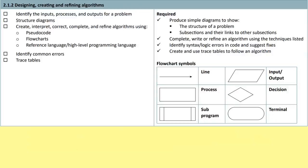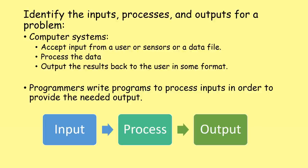Moving on, we are at 2.1.2 designing, creating and refining algorithms. First, identifying the inputs, processes and outputs for a problem. Remember, computer systems accept input from a user, sensors, or loaded from a data file. They process that data and output the results back to the user in some format. Programmers write programs to process inputs in order to provide the needed output. The situation is always: input, process, output.